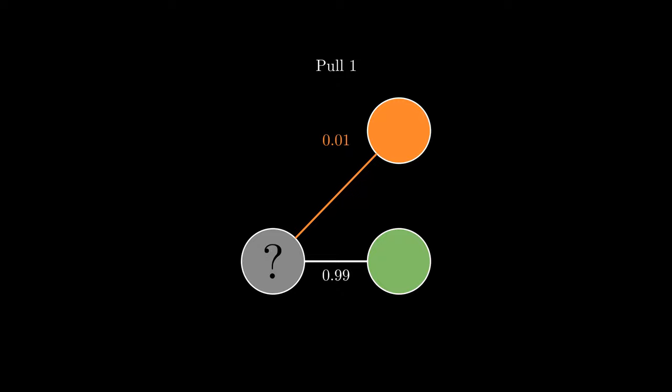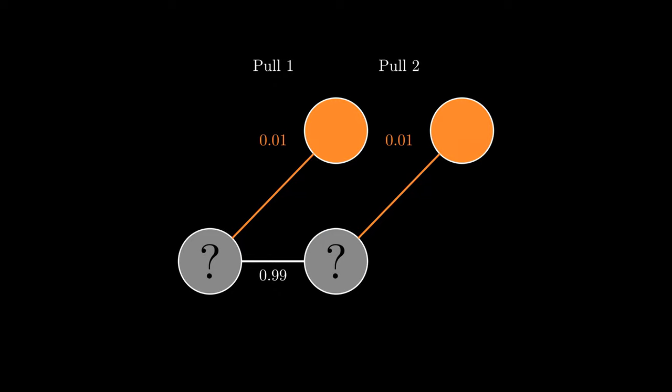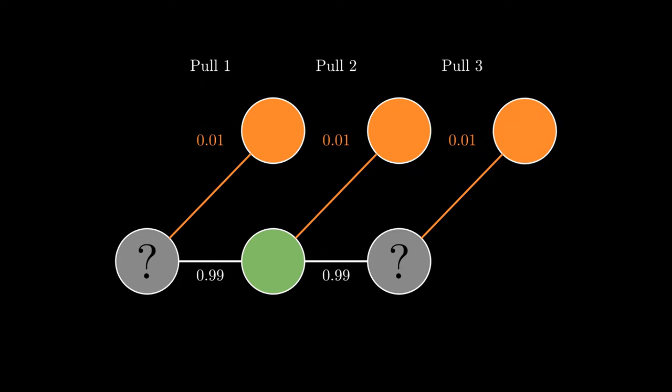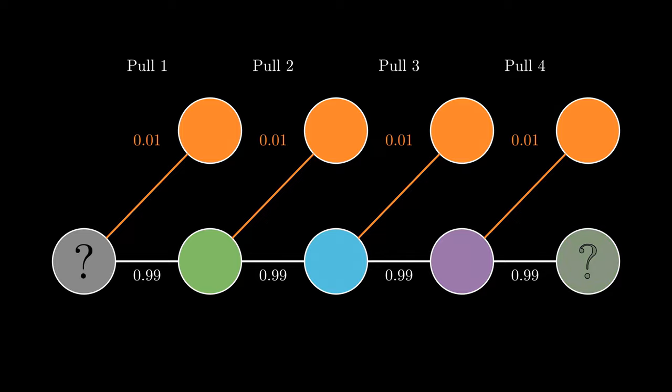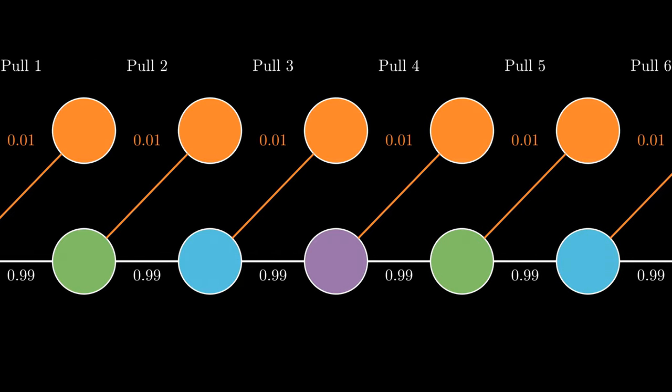From here, it's exactly the same situation. A 1% chance we get our legendary, and a 99% chance we don't. We repeat this situation for pull 3, then repeat again for pull 4. Since we are pulling 100 times, we do this all the way to pull 100.